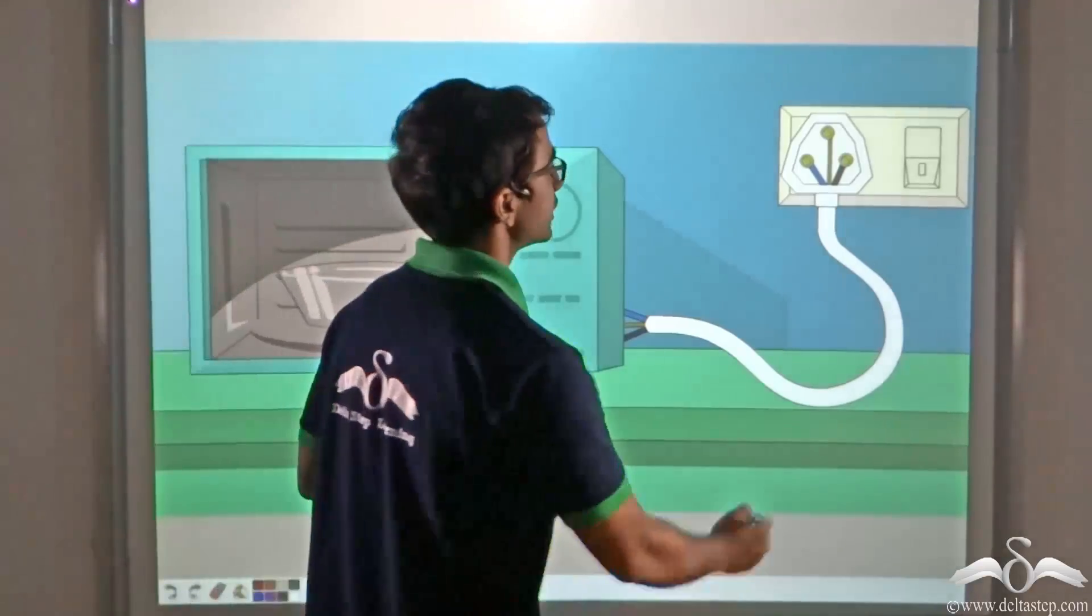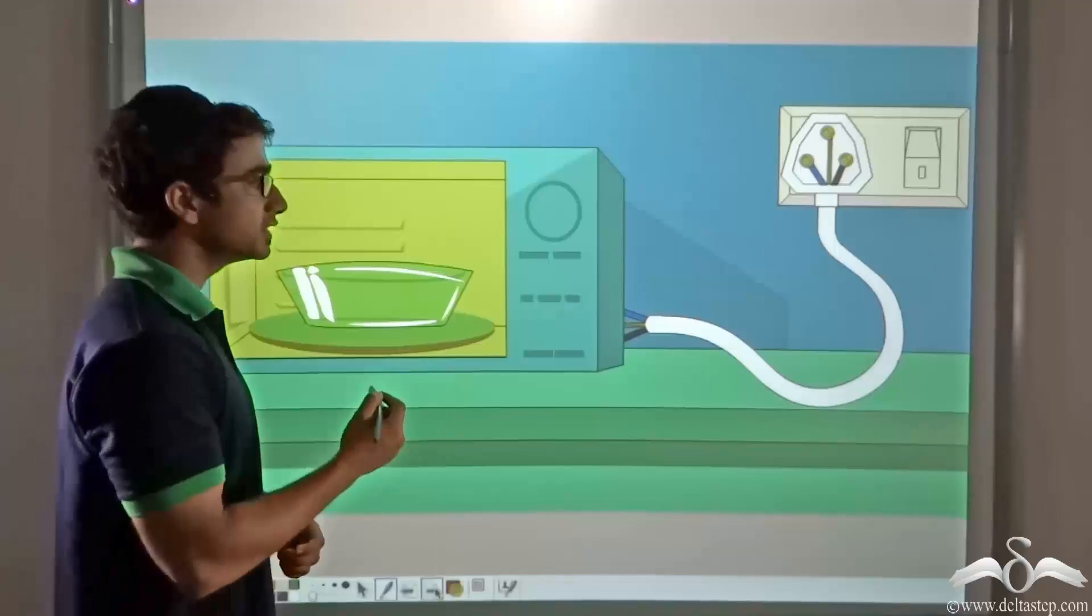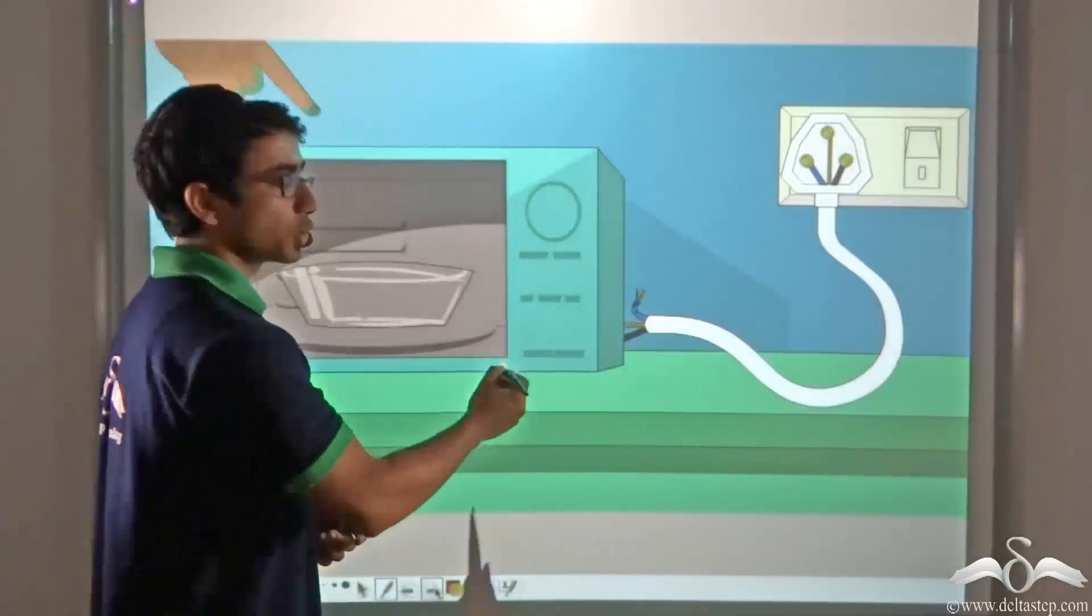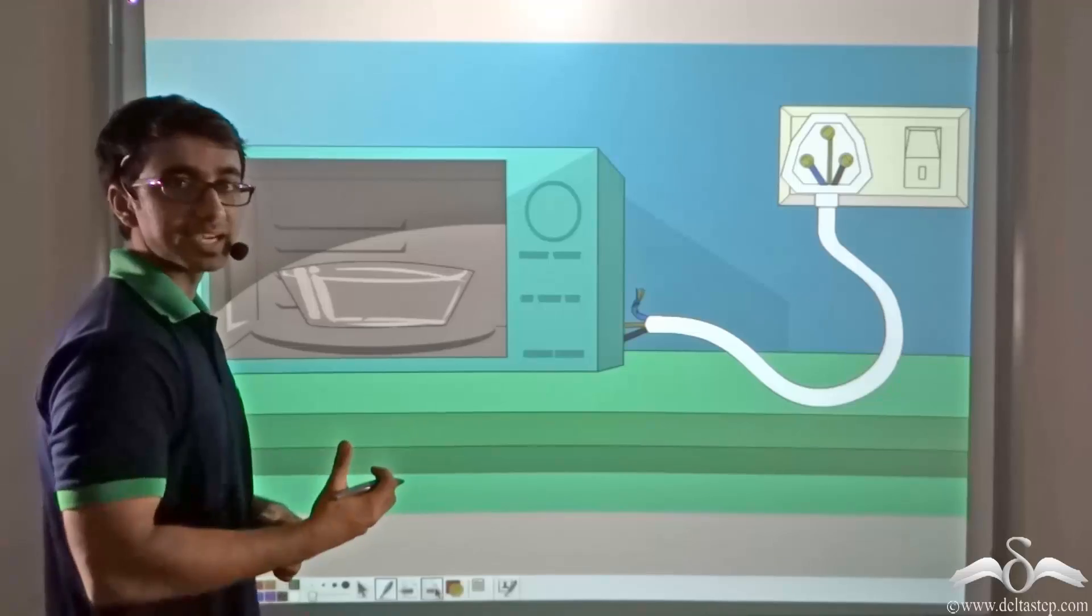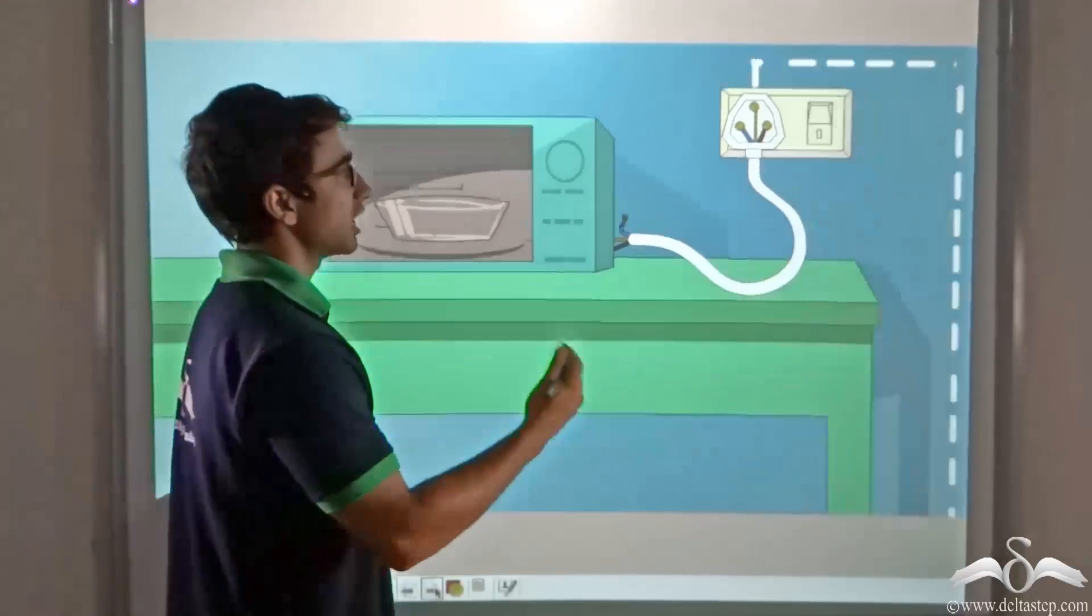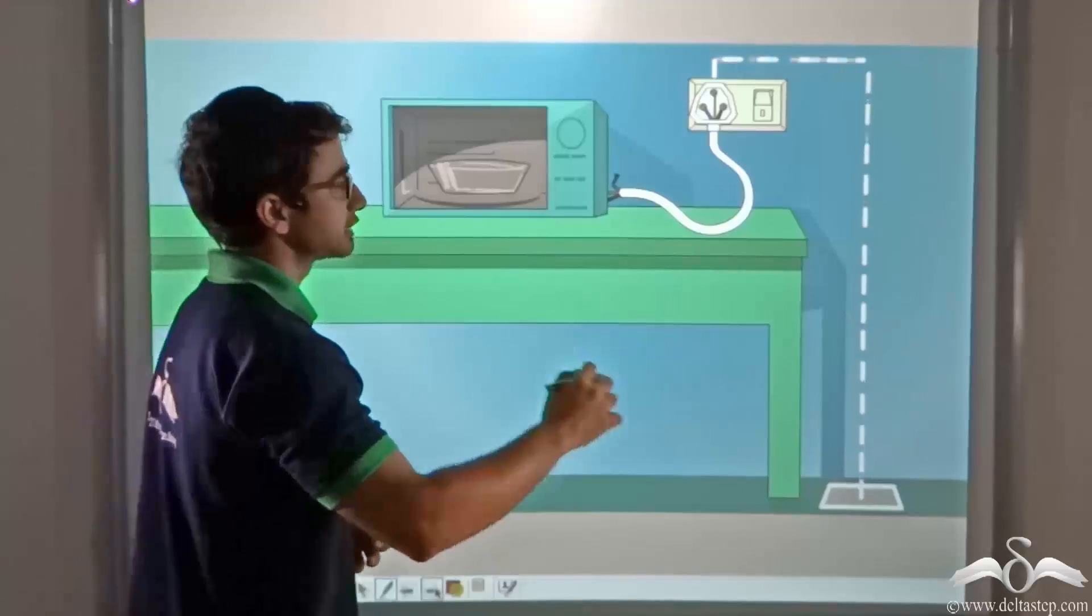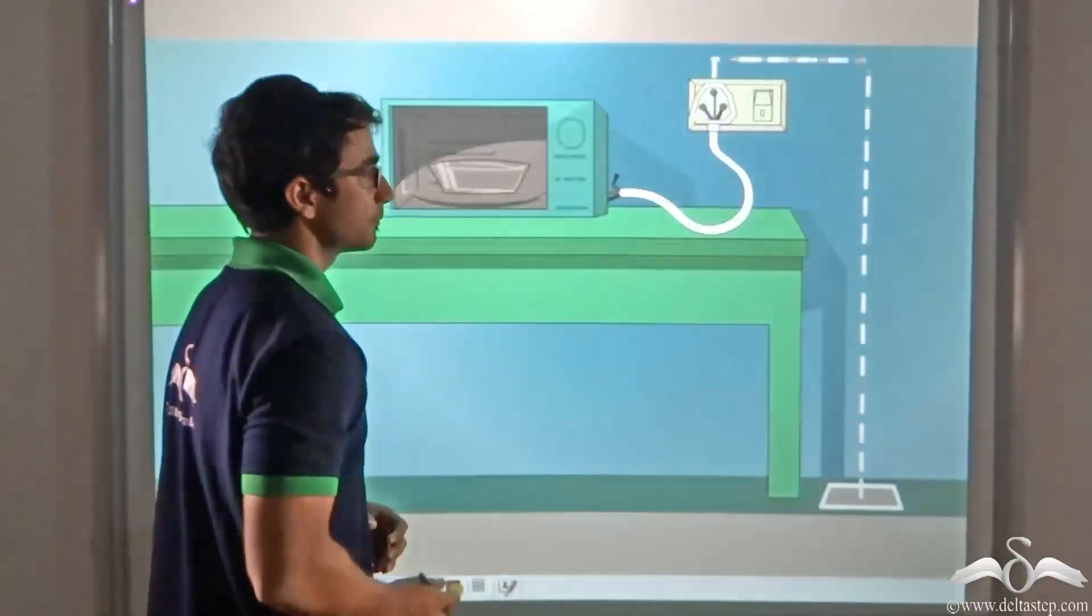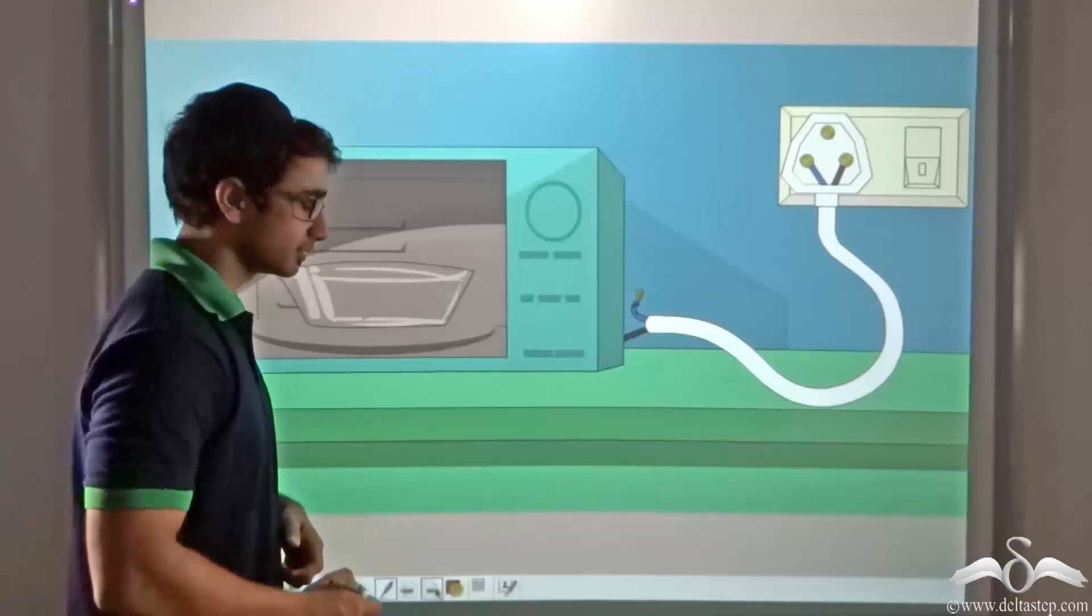So when we are incorporating an earthing for the appliance, we find that even though the appliance is encountering a fault, the appliance itself is not getting electrified. Instead, the current that would have otherwise crowded on the appliance is flowing directly down to earth and thereby protecting the appliance as well as the person touching it.